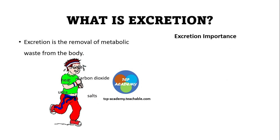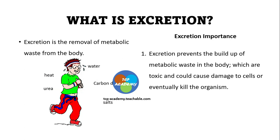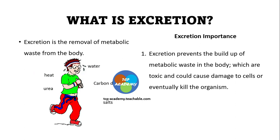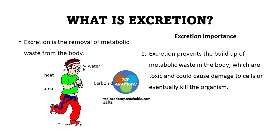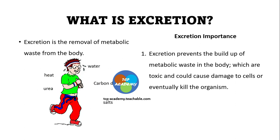What is the importance of excretion? Excretion has two main goals. The first is to prevent the buildup of metabolic waste in the body, which are toxic and could cause damage to cells or eventually kill the organism. As we said about carbon dioxide, if we leave these metabolic wastes — these wastes which were made in the body — they would become toxic and definitely damage cells or eventually kill the organism.